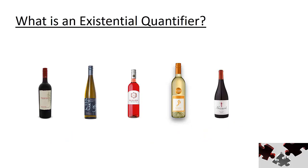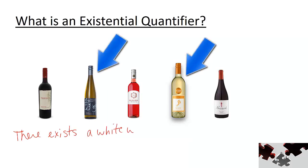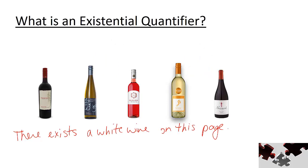Again looking at all of the wine on this particular page, is there a statement that we could make about one or more of the wines? A statement involving one or more of the objects in a particular set contains an existential quantifier and uses terminology like there exists or at least one. For example, there exists a white wine on this page — in fact there are two. Feel free to add any other statements involving existential quantifiers below in the comments to help out other students.